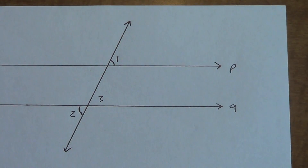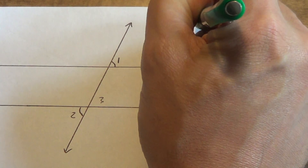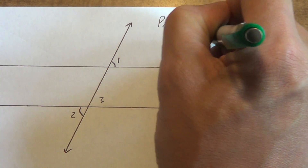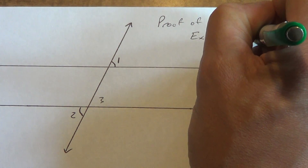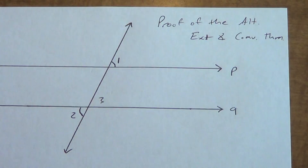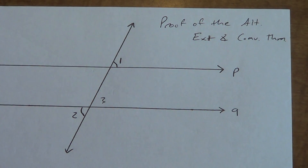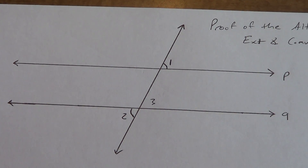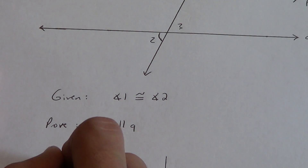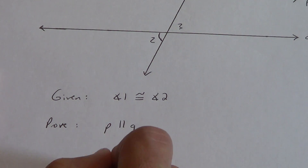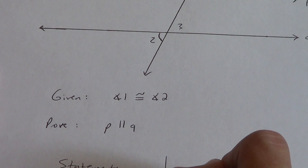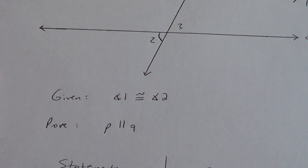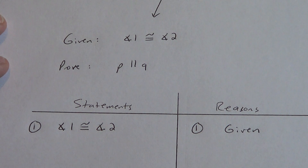Now let's look at the next one: the proof of the alternate exterior angle converse theorem. Go ahead and copy this picture down. I've got lines P and Q with angles 1, 2, and 3 marked — make sure you get them in the right spots, otherwise the proof won't make sense. Here are the givens: angle 1 is congruent to angle 2, and P is parallel to Q is what we're trying to prove.